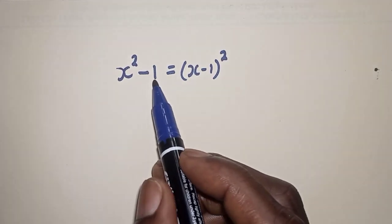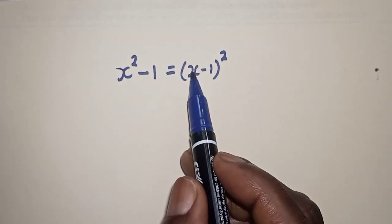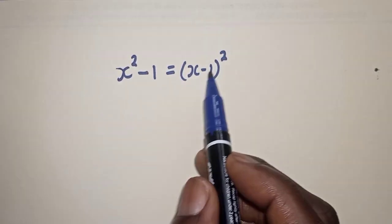Hello, welcome to Magist. In this class, I want to find the value of s from this equation: s squared minus 1 is equal to s minus 1 all squared.